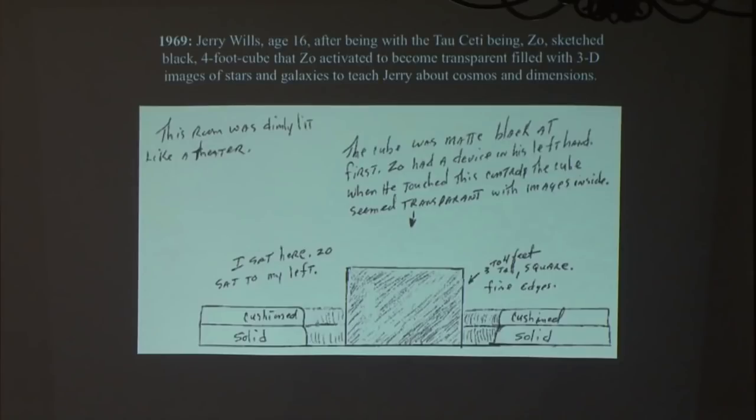The extraterrestrial from Tau Ceti also showed Jerry Wills a four-foot black cube that holographically projected the Milky Way galaxy and other parts of the universe that showed different stars in different colors. As Zoe pointed out star systems, he telepathically told Jerry that people, homo sapien, or at least humanoid types on Earth did not originate on this planet. This is a laboratory planet. Life has been mixed, matched, manipulated, and seeded on this planet for literally maybe a couple of billion years, but certainly the last half billion.